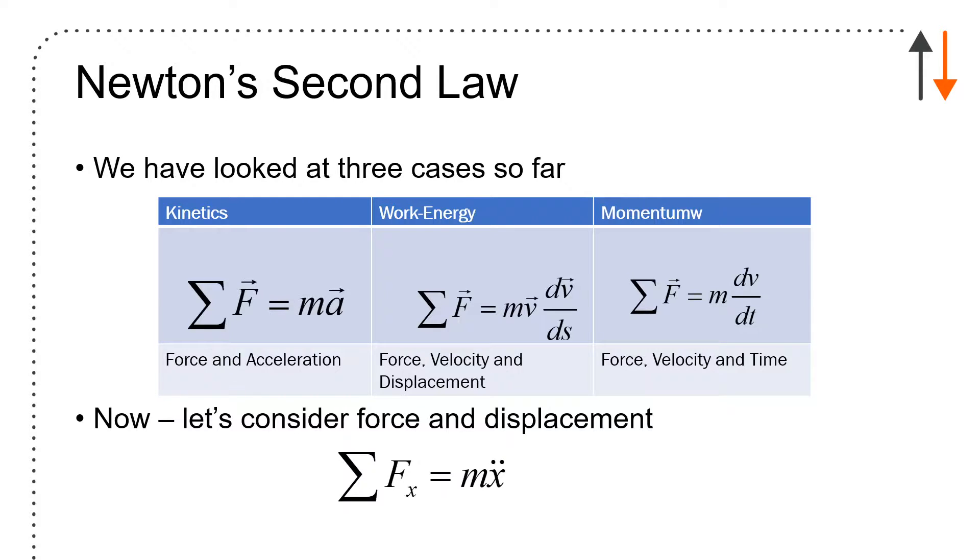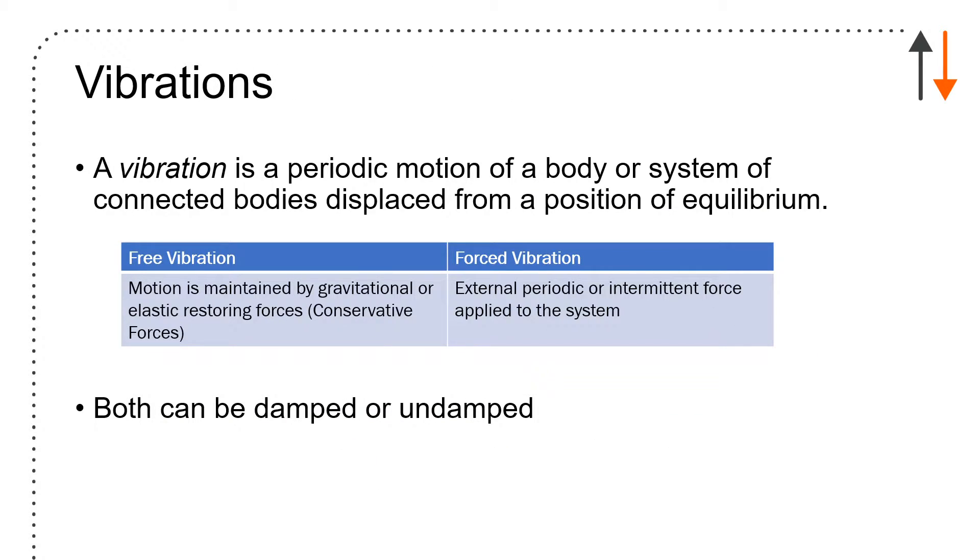Vibration is periodic motion. You have free vibration where motion is maintained by gravitational or elastic restoring forces (conservative forces), and forced vibration where external periodic or intermittent force is applied to the system. Both can be damped or undamped.